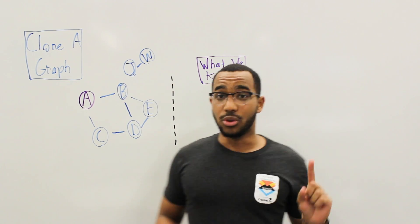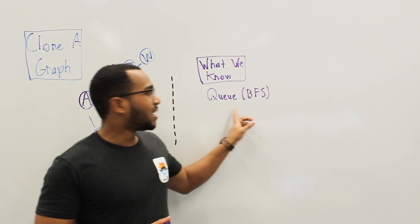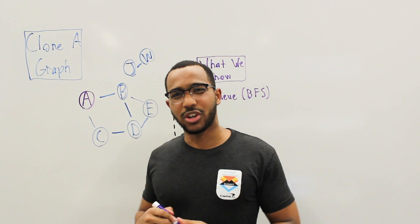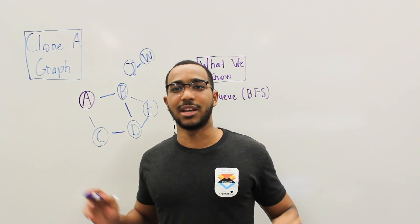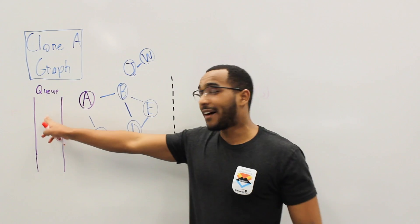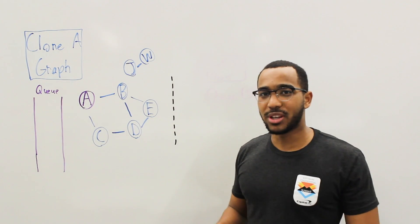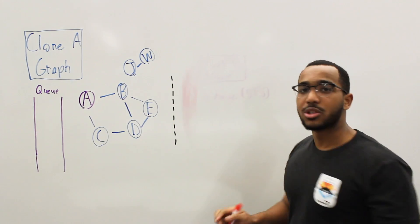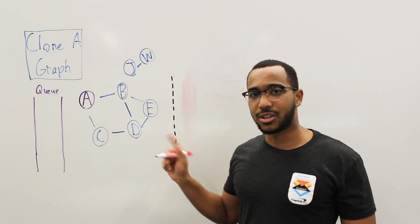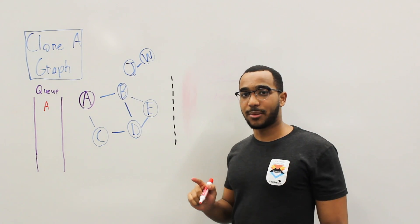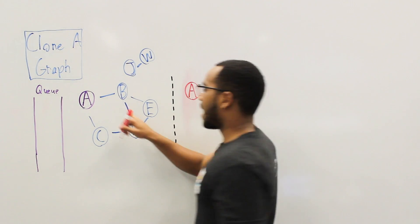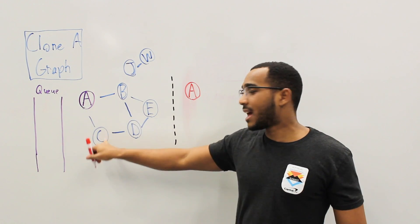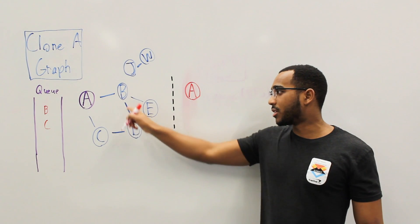So what do we need for breadth-first search? We need to use a queue. Our queue is going to be FIFO in nature — the first item to come in is going to be the first item to come out. So what we're going to do is add A to the queue. Then we pull the first item from the queue, which is A, and we'll give it its clone. Then we'll add A's neighbors to the queue for processing next. So B and C will get in the queue. They're up next.